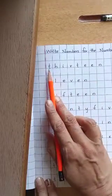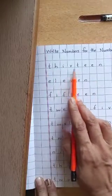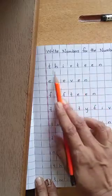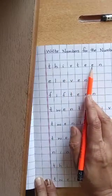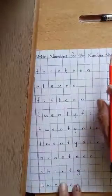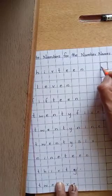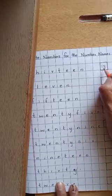Okay. First one is T-H-I-R-T-E-E-N. This is 13. You have to write number 13 in the given box. 13.